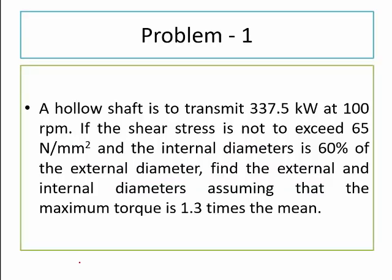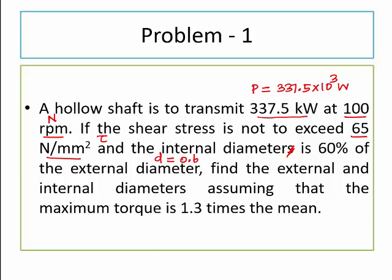The problem: a hollow shaft is to transmit 337.5 kilowatt — that is the power to be transmitted, 337.5 × 10³ watts at 100 rpm. The shear stress is not to exceed 65 newton per mm², and the internal diameter is 60% of the external diameter, so small d = 0.6 × capital D. Find the external and internal diameters, assuming that the maximum torque T_max is 1.3 times the mean torque T_mean.